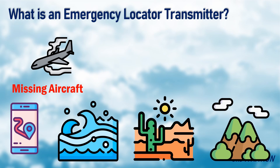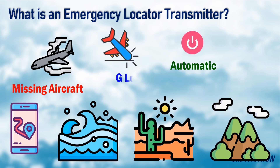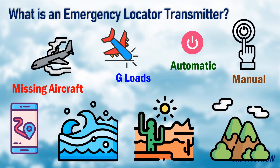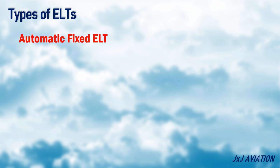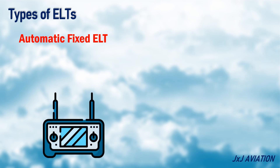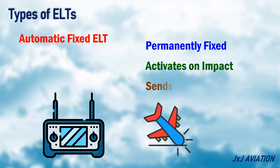The ELT can get activated automatically on impact based on the G-loads, or can be activated manually as well. So let's look at the different types of ELTs. The Automatic Fixed ELT is permanently fixed on the aircraft and activates upon impact, sending distress signals.